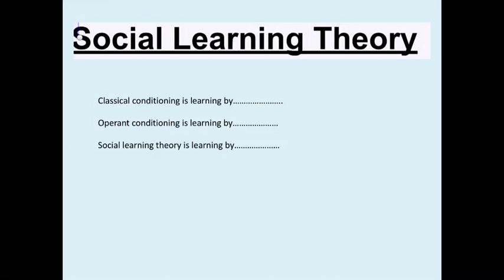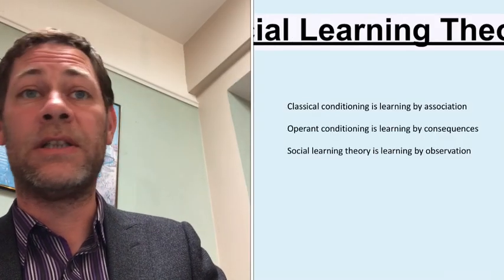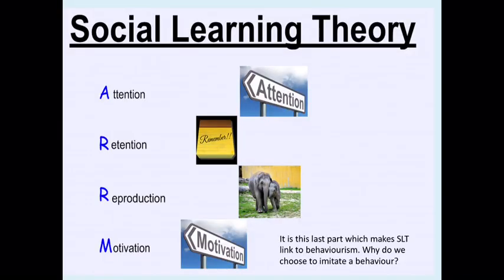To summarize: classical conditioning is learning by association; operant conditioning is learning by consequences; and social learning theory is learning by observation. Learning by observation requires four mechanisms, identified by Bandura, to occur — remembered by the acronym ARRM: attention, retention, reproduction, and motivation.